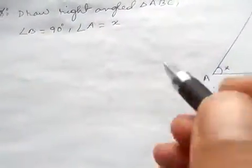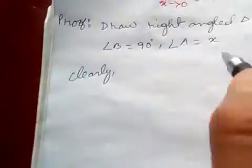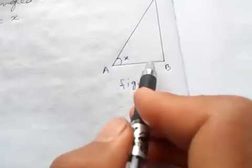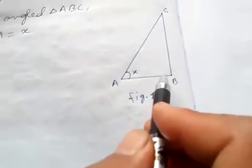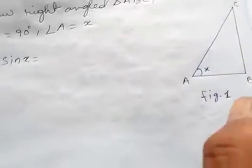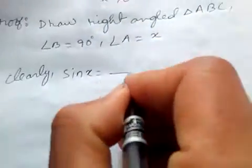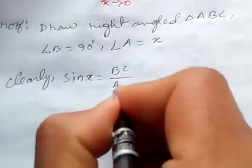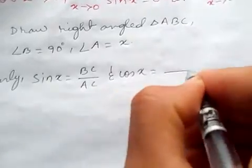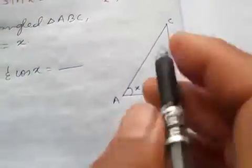Now, from this, clearly, sine of x is perpendicular by hypotenuse. So, perpendicular is BC, hypotenuse is AC. It is BC by AC. And cosine of x is base by hypotenuse, base is AB by AC.